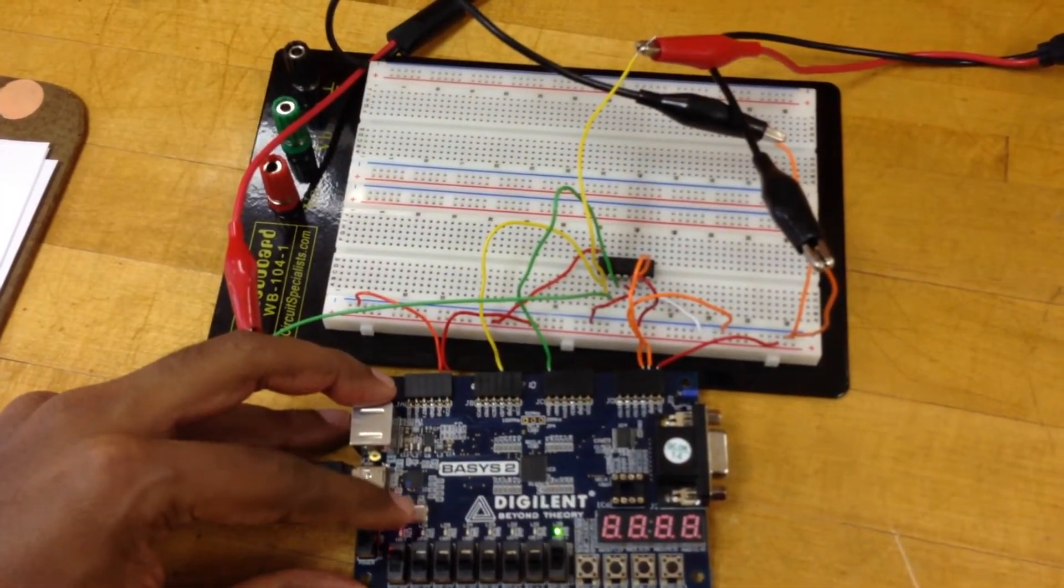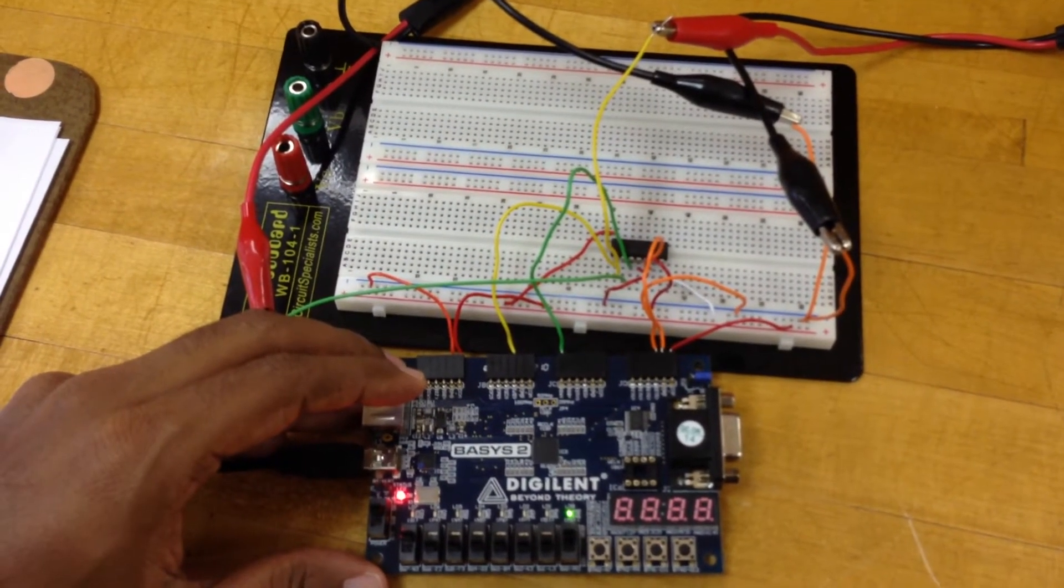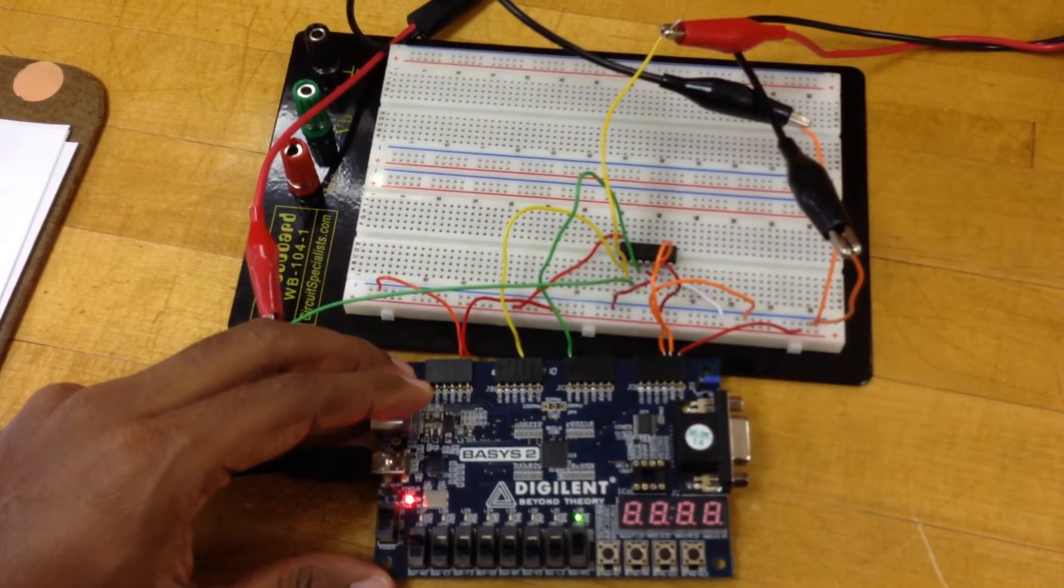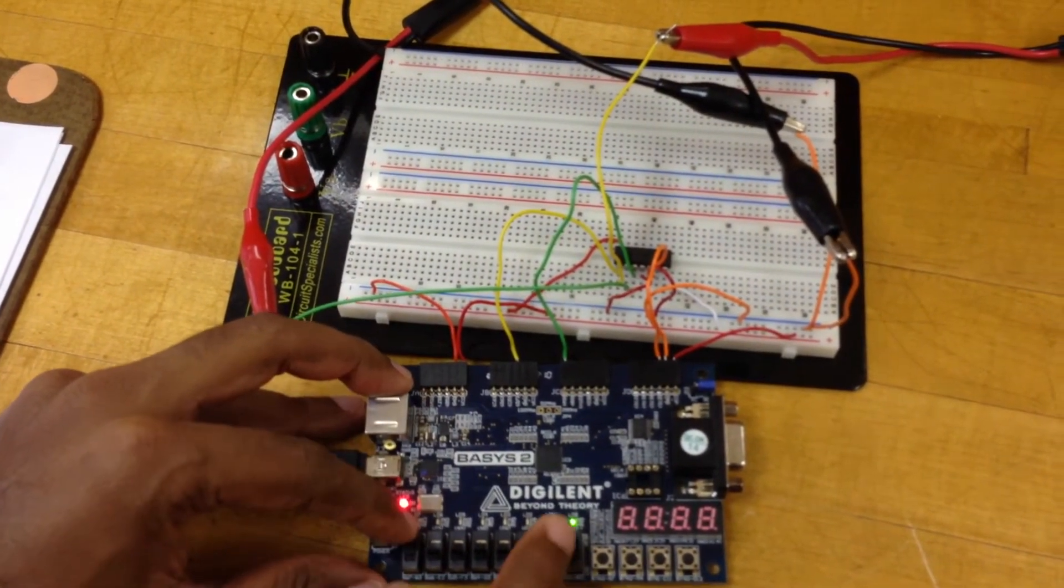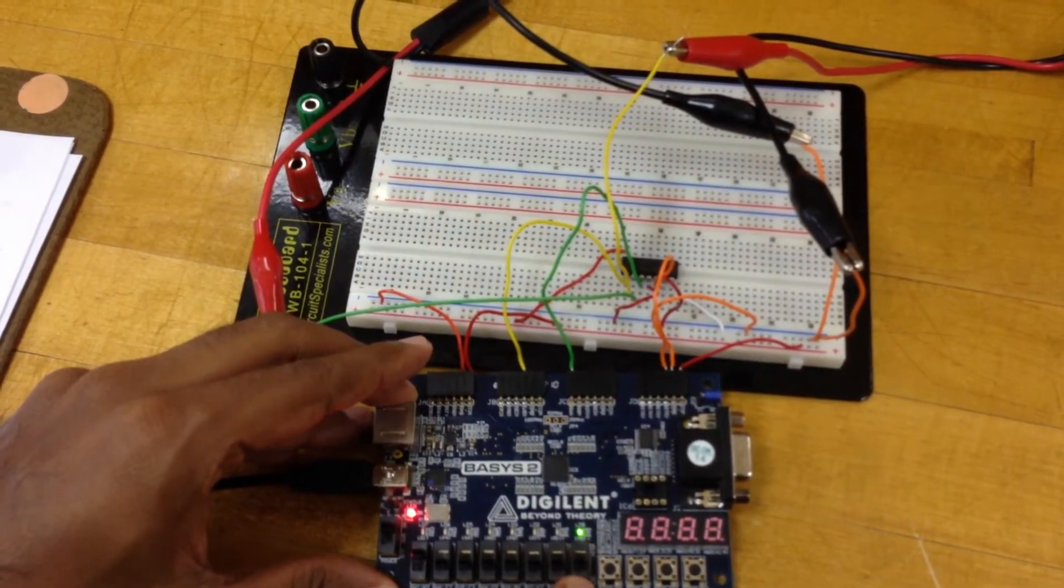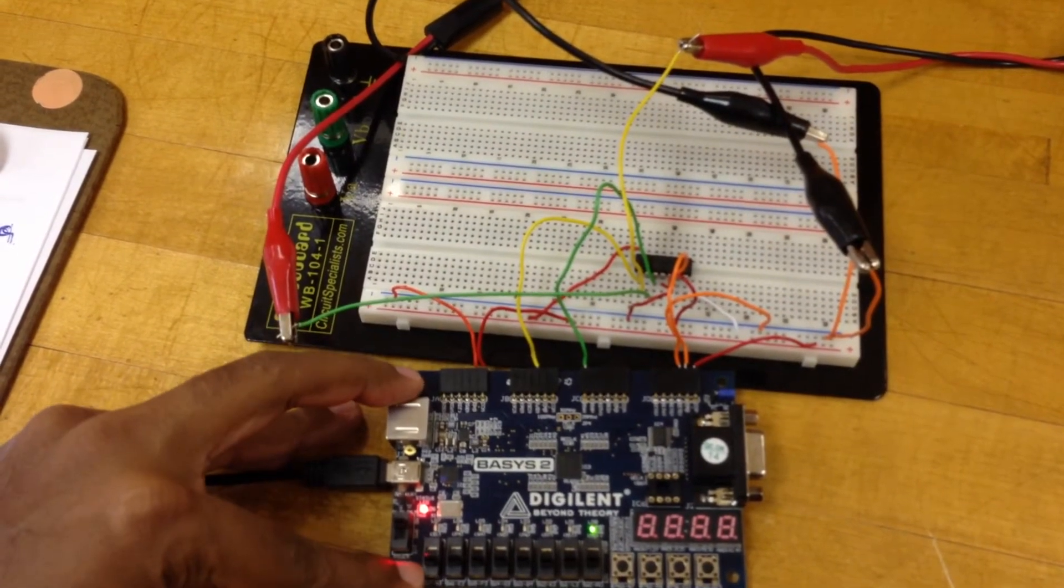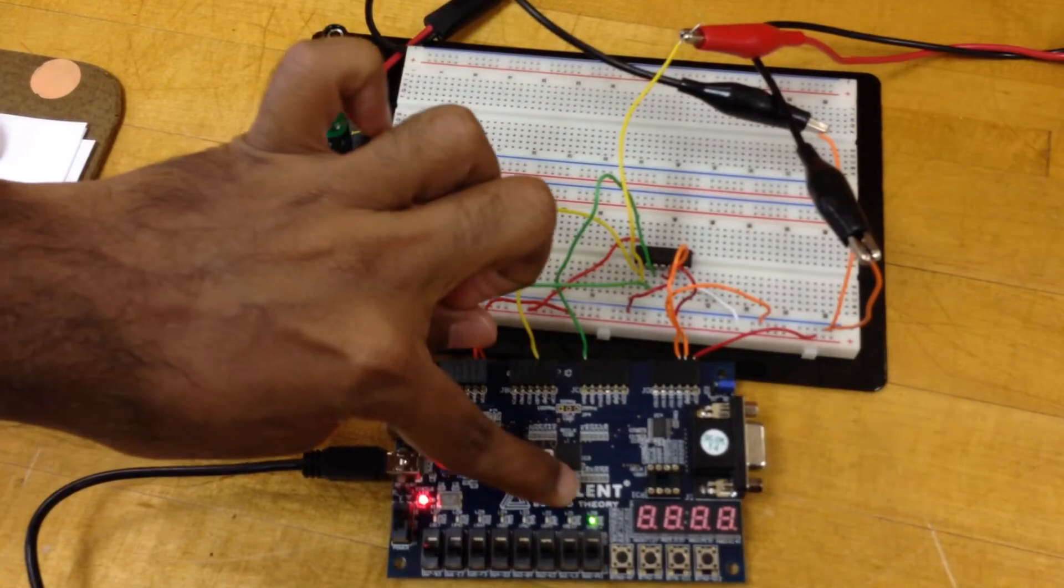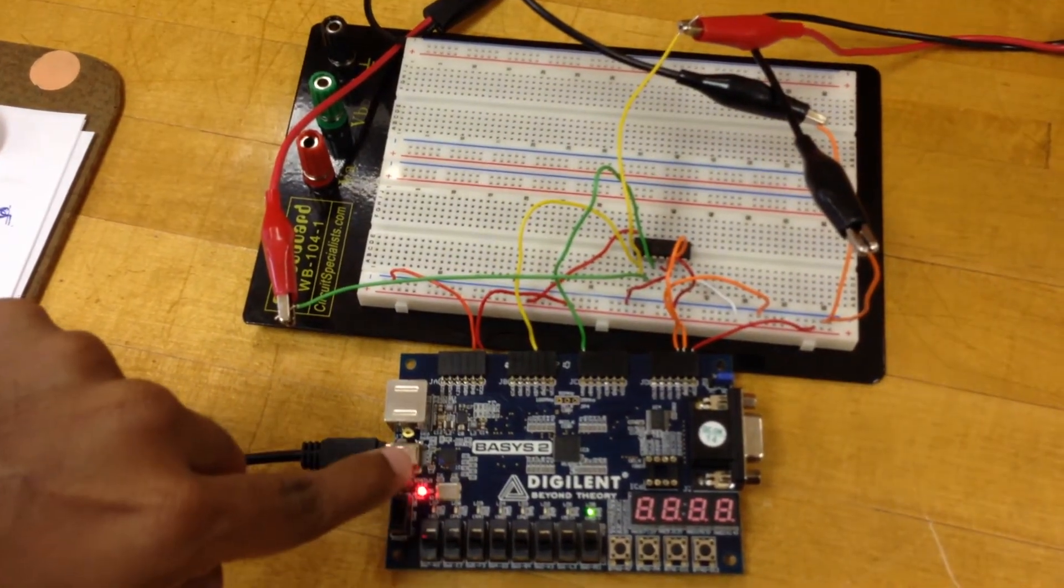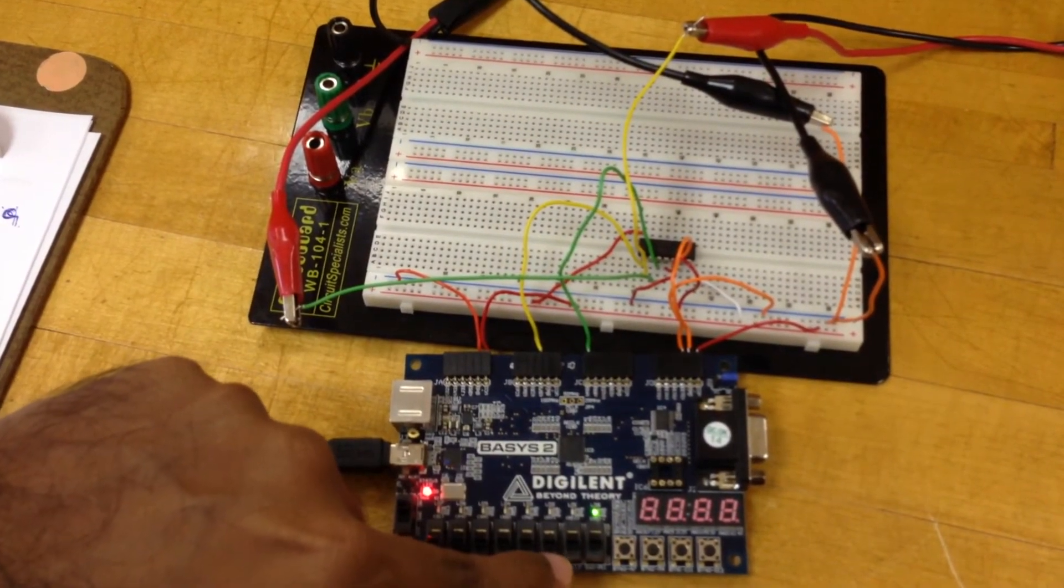After measuring Q output going from low to high, now we are going to measure the delay between clock and Q going from high to low. To do that, turn off the input, set the input to 0, and put the clock also to 0. As you can see, the output is still on. When I push clock up, the output will go from 1 to 0. That's what we are going to measure.